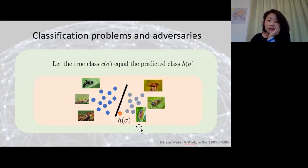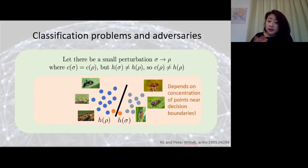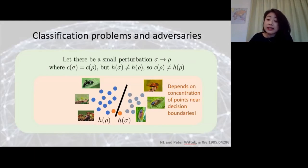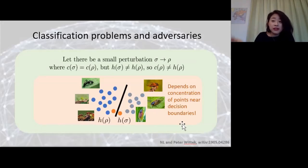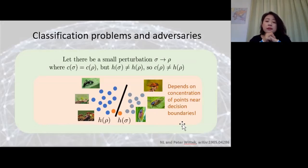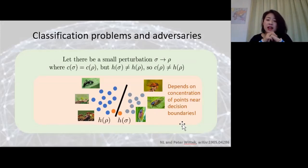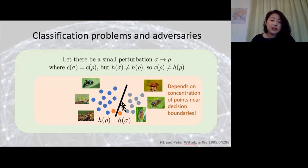If you have an adversary, what would you do? You would push it slightly across this dividing line. But of course, if the original example is really far from the dividing line, it doesn't matter which direction you push—you're never going to induce a misclassification. So the ability to find an adversarial example—a small perturbation that induces a misclassification—really depends on the concentration of points near these decision boundaries. Here's an example: suppose we want to classify the points on the surface of a ball. For machine learning algorithms, there's always some set of points which are originally misclassified.